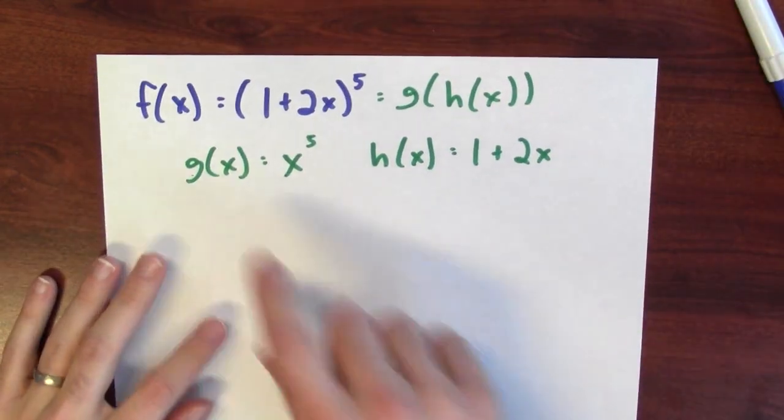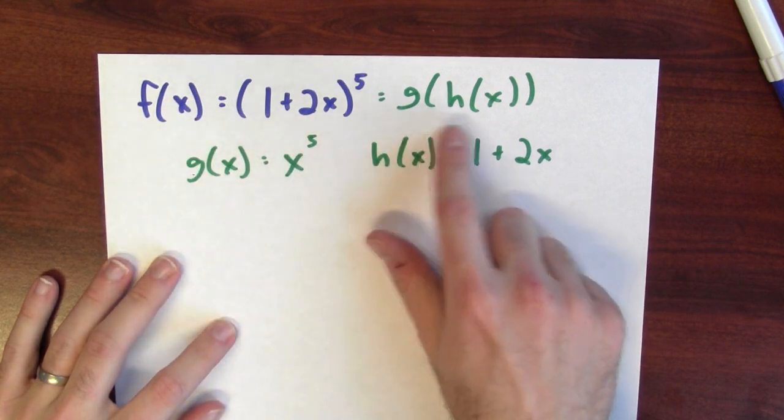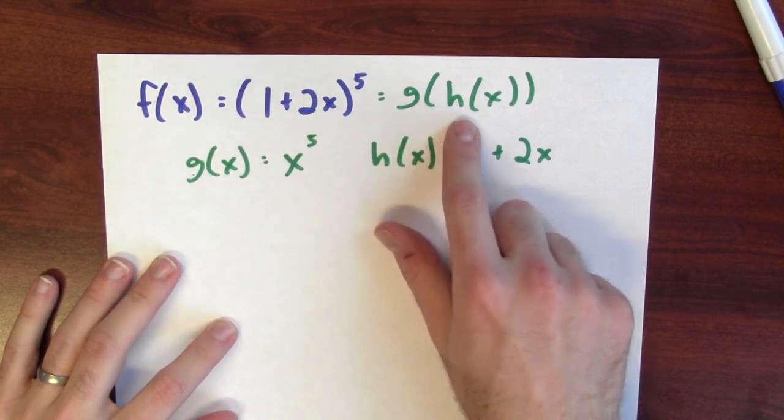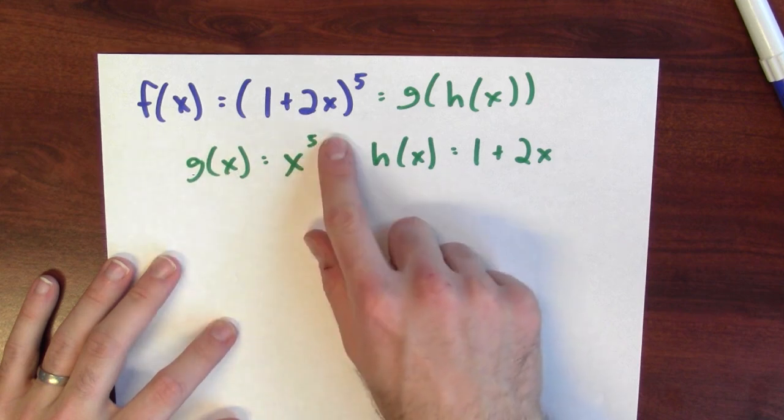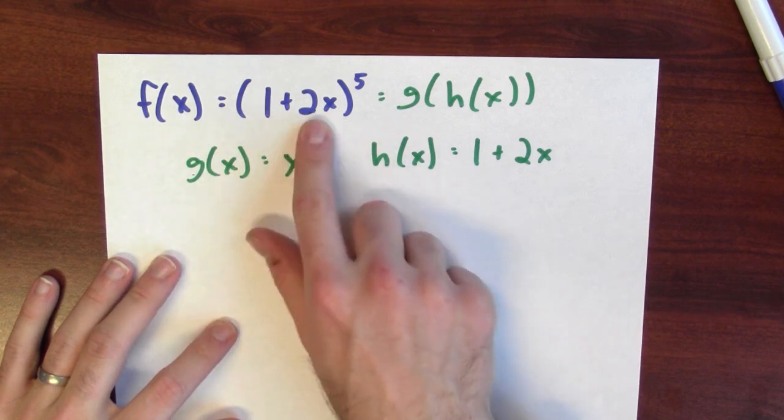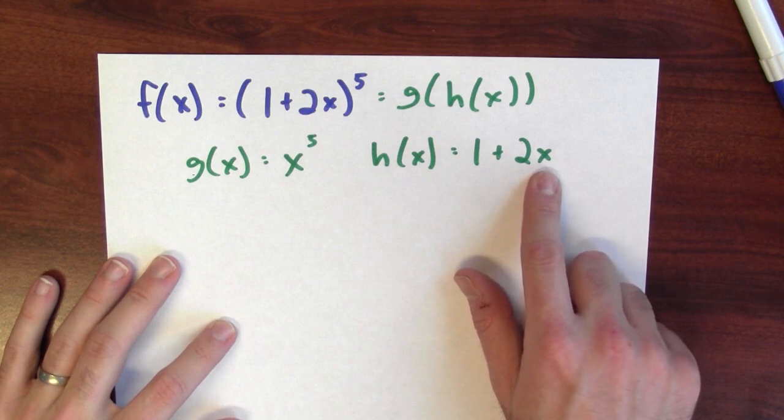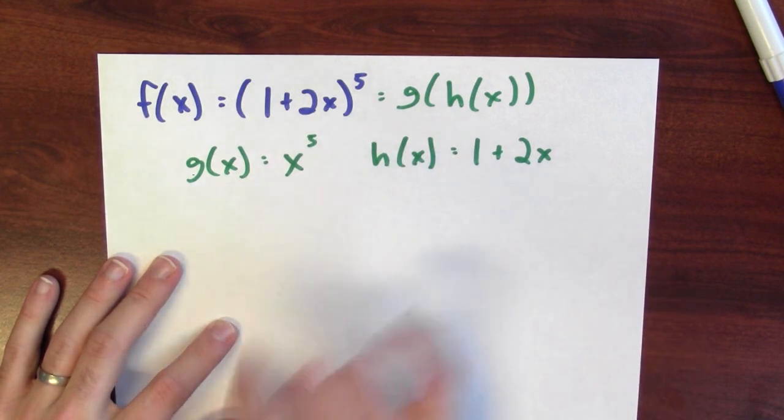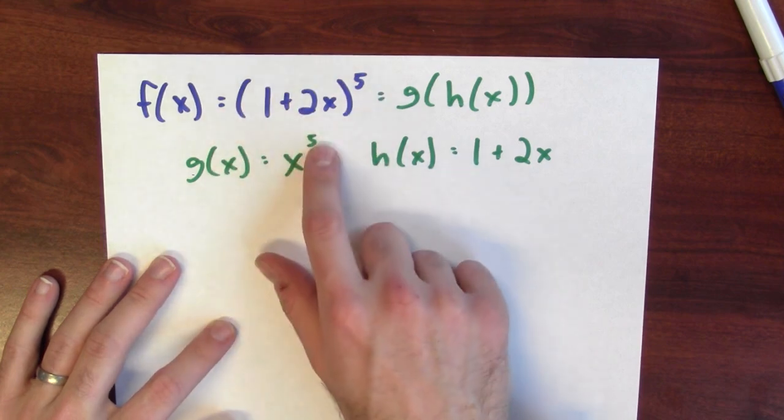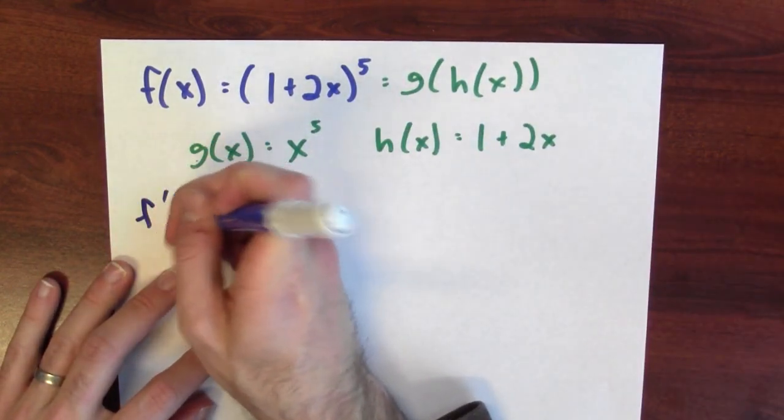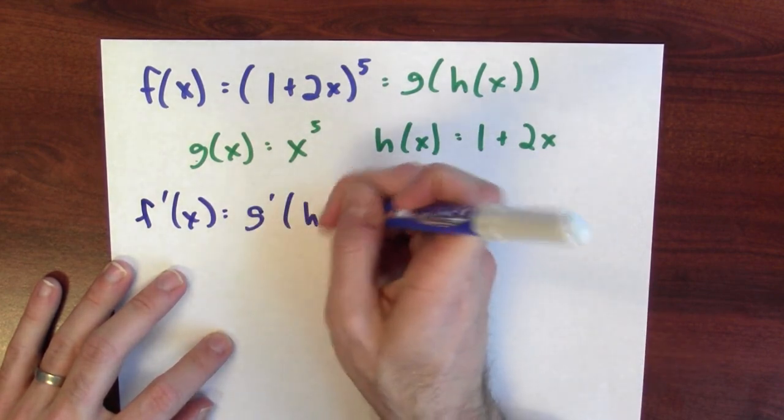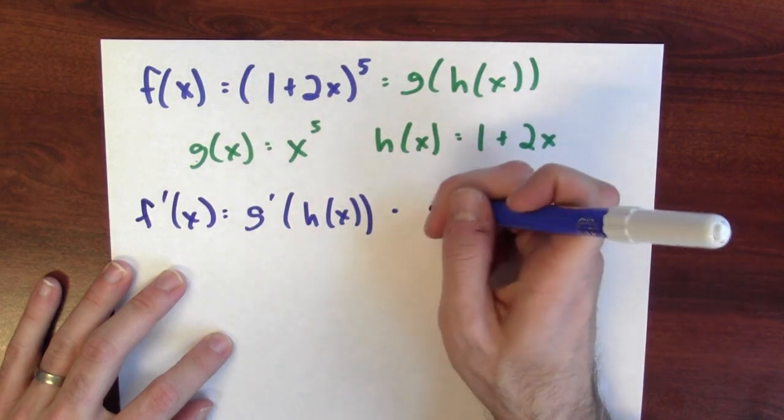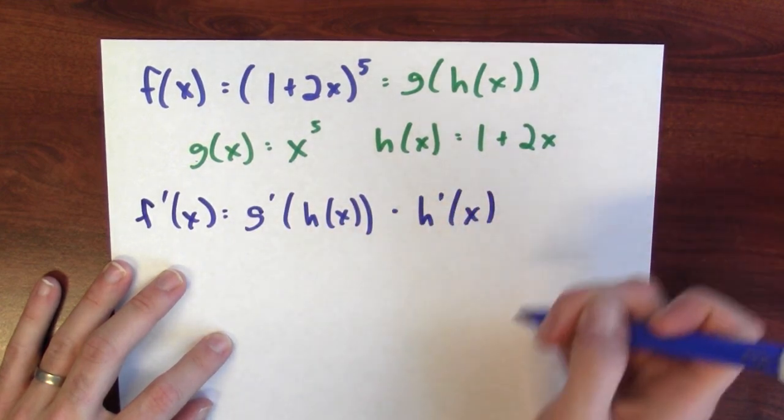So let's compute the derivatives in the chain rule. The first step is we're going to split up the function f into a composition of two functions, g and h. G here, the outside function, is the fifth power function. And h, the inside function, is 1 plus 2x. So if I combine those two functions, take their composition, I get back f. Now I want to differentiate f. And by the chain rule, that's the derivative of the outside at the inside function times the derivative of the inside function.